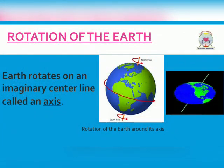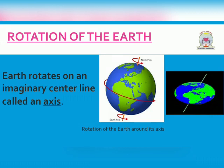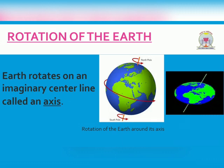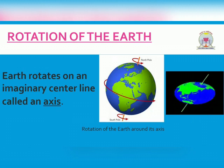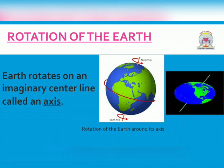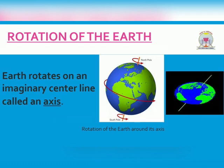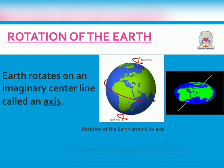A globe also shows how the Earth rotates on an imaginary center line called an axis. The axis of the Earth is slightly tilted. At the end of this line are the North Pole and South Pole. These poles help us to find directions on the Earth. Remember, Earth rotates from west to east. Here is a diagram showing the rotation of the Earth around its axis.